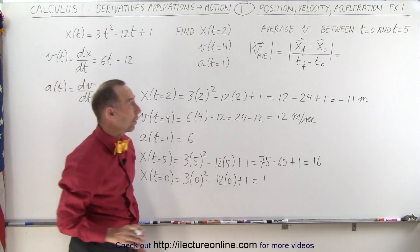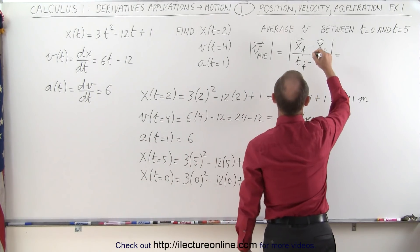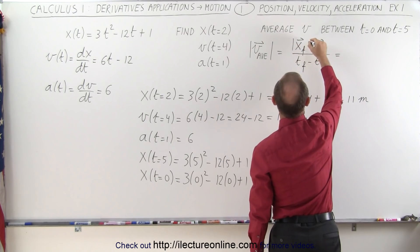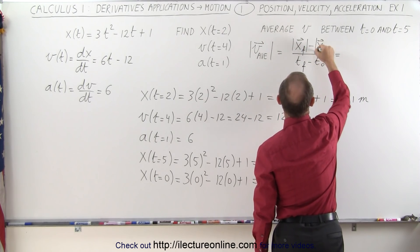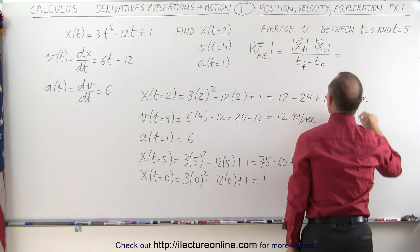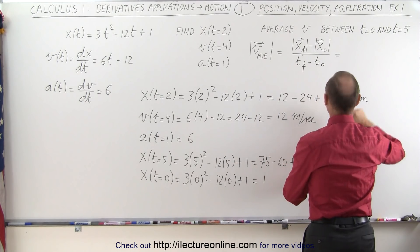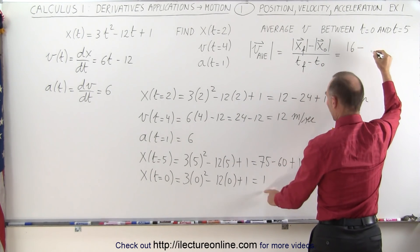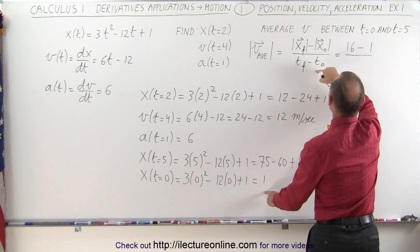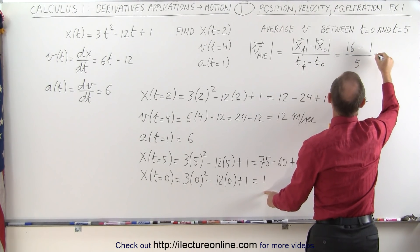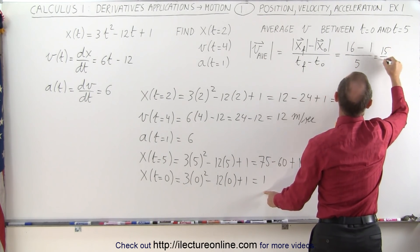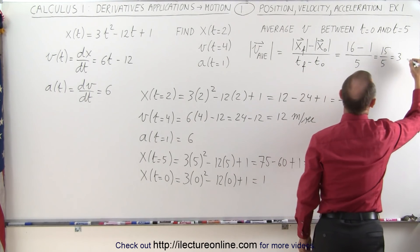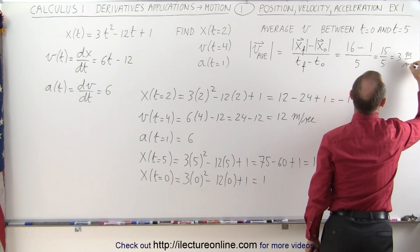Now plugging into our average velocity equation, we take the absolute value of 16 for the final position minus 1 for the initial position, divided by the elapsed time of 5 seconds. That gives us 15 divided by 5, which is 3. The units of velocity would be meters per second.